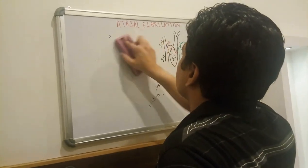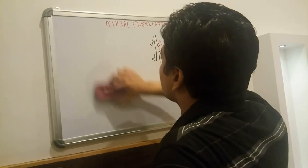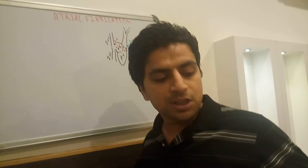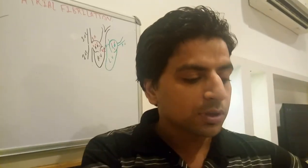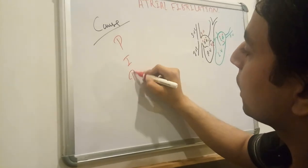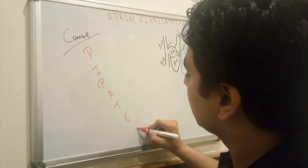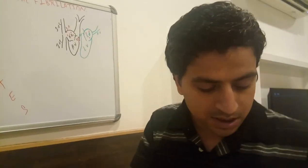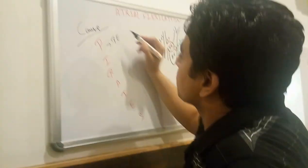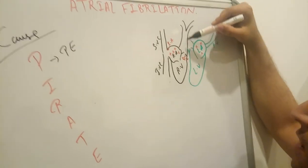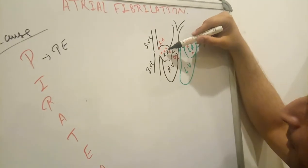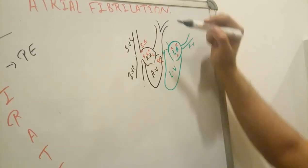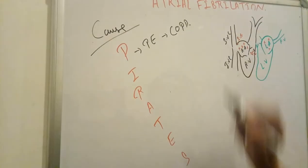I hope the ECG findings are clear. Now, the causes of atrial fibrillation. I use the mnemonic PIRATES — like the movie Pirates of the Caribbean. P represents pulmonary embolism: when an embolus blocks the pulmonary artery, the right ventricle is pressurized, and the right atrium contracts ectopically, causing atrial fibrillation. This also applies to COPD, where there is pressure on the right atrium.